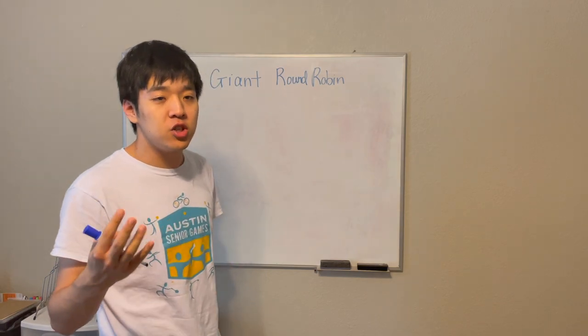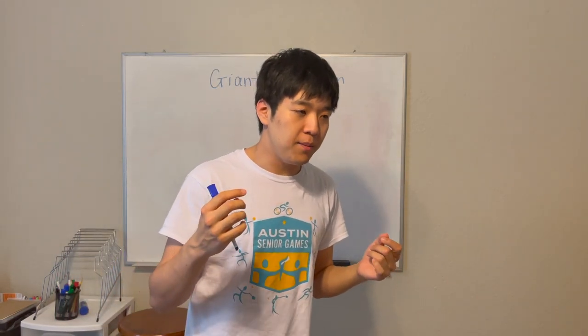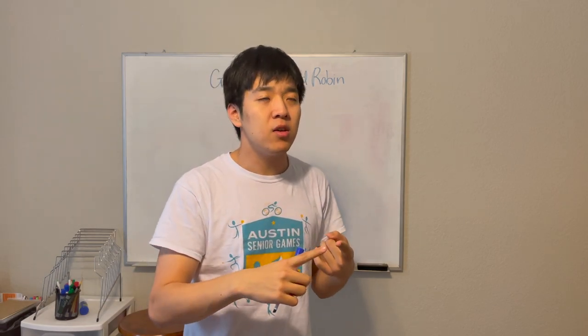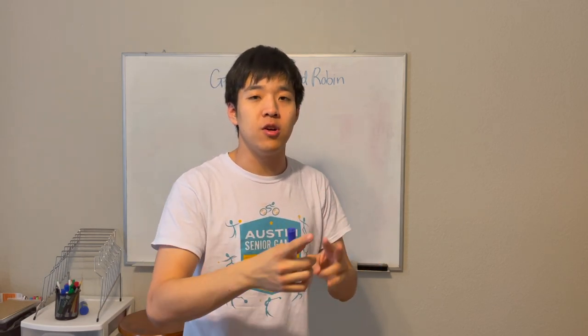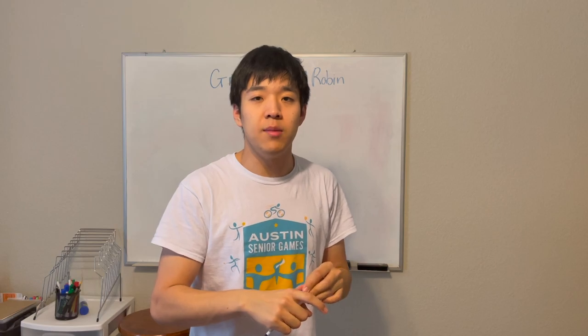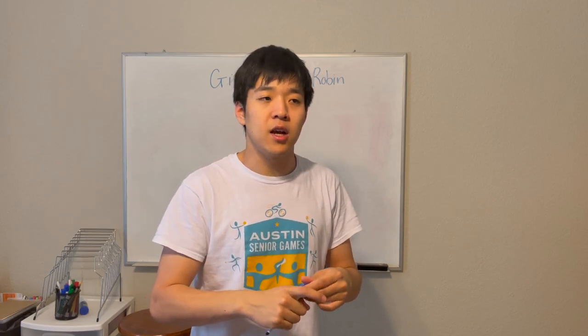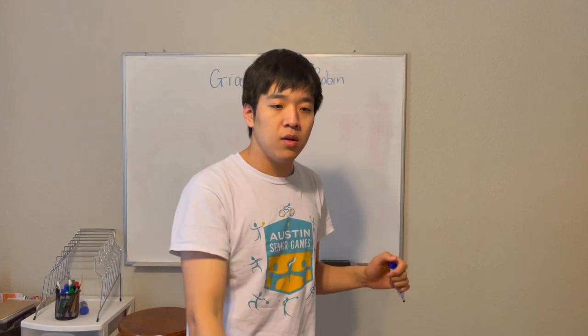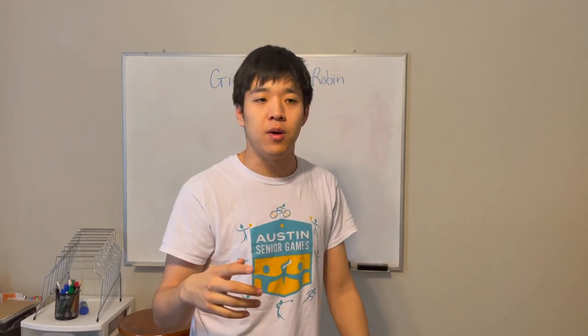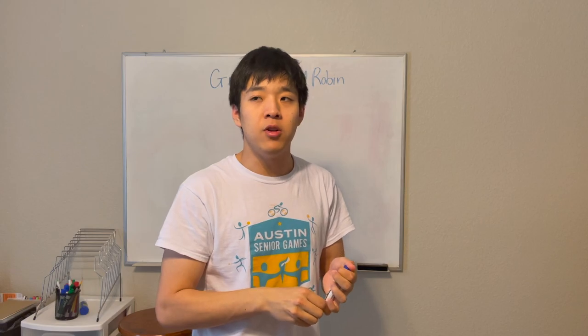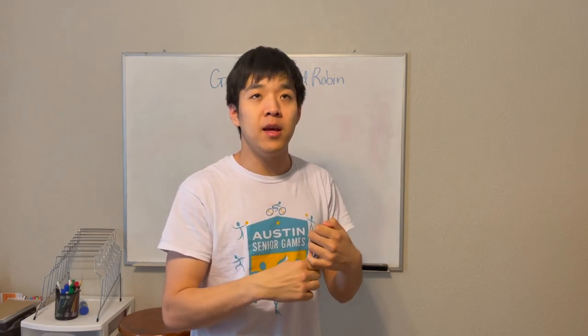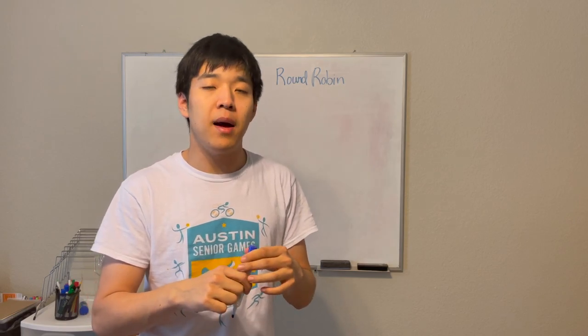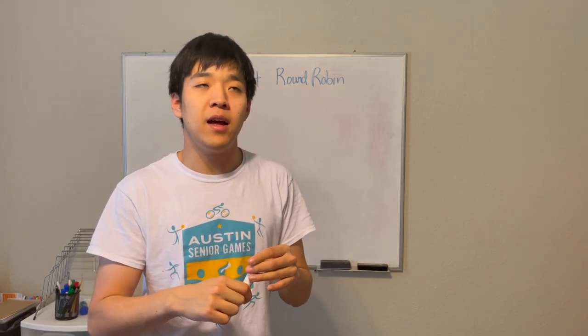This video is supposed to inform you about how a giant round robin works. So what's giant about the round robin? In a traditional tournament you only play a round robin phase and then if you're in the top one or two you advance to the elimination round. But in a giant round robin you get to play more matches - everybody in the tournament will play at least eight matches up to a maximum of eleven if you advance to the finals.